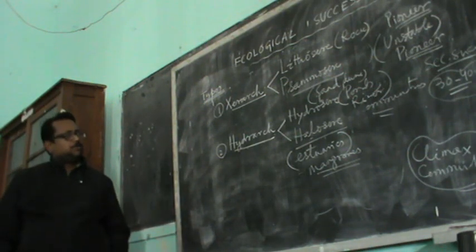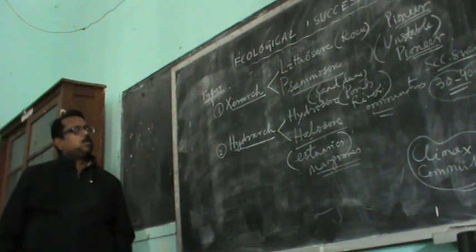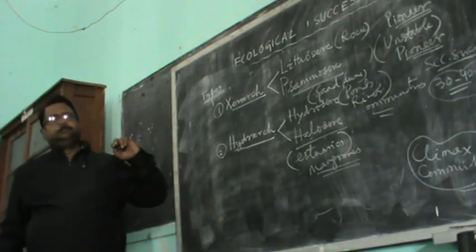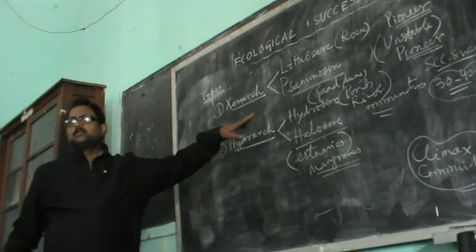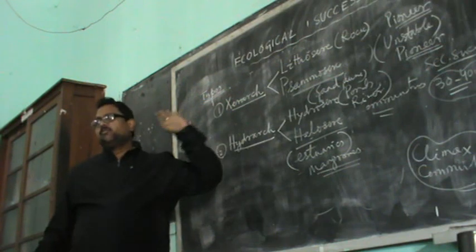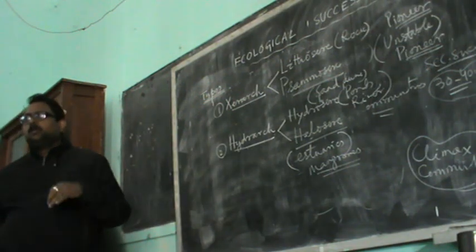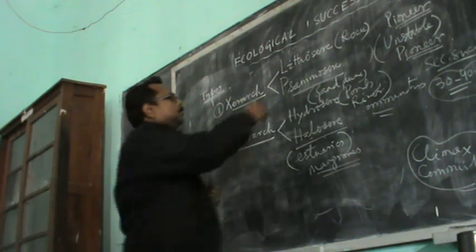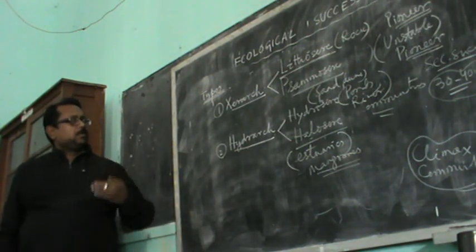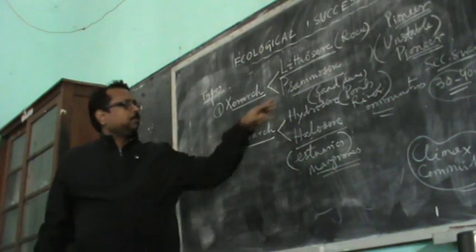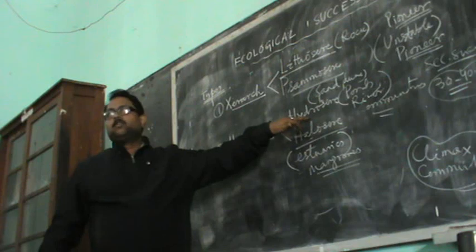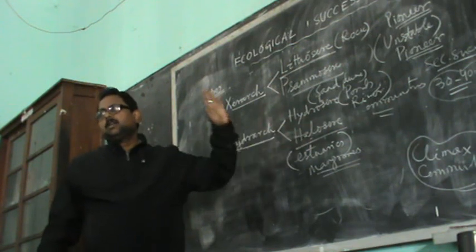So there are four different types of succession. Xerarch is of two types: one starting on a bare rock surface — that is lithosere — and the other on sand dunes, that is psammosere. The plants are also known as lithophytes and psammophytes respectively. On hydrosere, the plants are hydrophytes, and on halosere succession, the plants are halophytes.